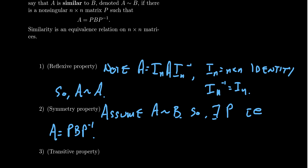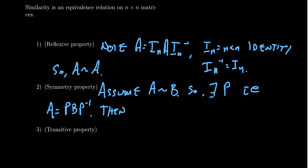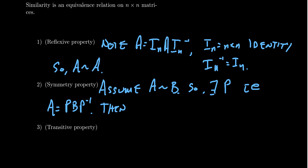Now you want to start unraveling this equation. If you're not sure what to do, you can always work backwards. We want to conclude with something like: therefore, B is related to A — B is similar to A. And that means B equals Q A Q inverse. So we have to find some non-singular matrix so that you can factor B using A and that non-singular matrix.